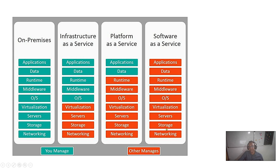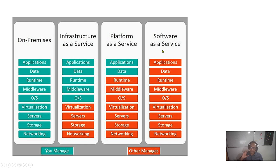With software as a service, everything is managed for you, but you must trust the security provided by your service provider. One big issue is vendor lock-in — it is very difficult to switch. If you have chosen a SaaS vendor like Google and want to transfer later to Microsoft or Amazon, it is difficult because all your software, codes, and everything are tied to that vendor. You have to choose your service provider carefully, potentially with consulting advice.